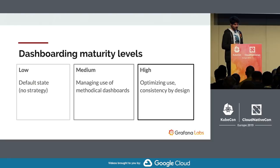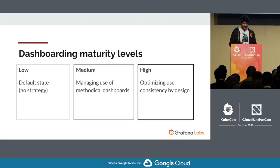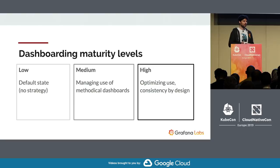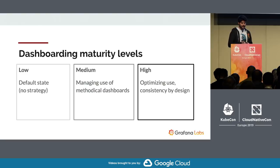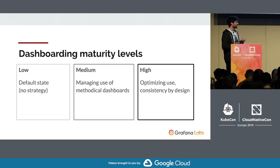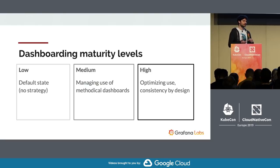This is pretty simple. We already heard this morning in a keynote how three is a magic number, and I just went with that as well. By default, you probably just don't really have a strategy for dashboarding and you're just sort of changing some things here and there. If you are a bit more serious, then you try to manage your dashboarding a bit more and use methodical dashboards — I'll tell you a bit later what those are. And what I think is a very mature level is when you try to optimize that use and actively combat sprawl, and most importantly, you try to ensure that those dashboards are consistent by design.